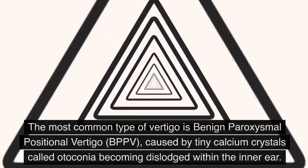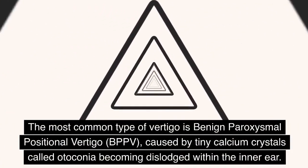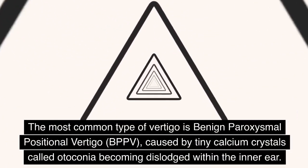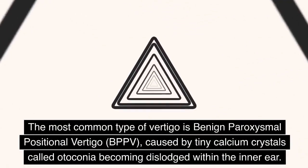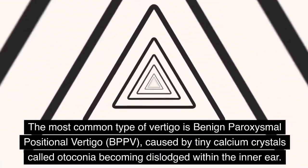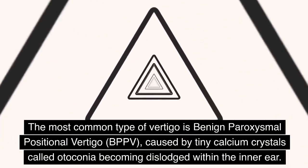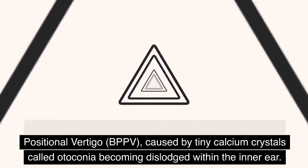The most common type of vertigo is benign paroxysmal positional vertigo, BPPV, caused by tiny calcium crystals called otoconia becoming dislodged within the inner ear.